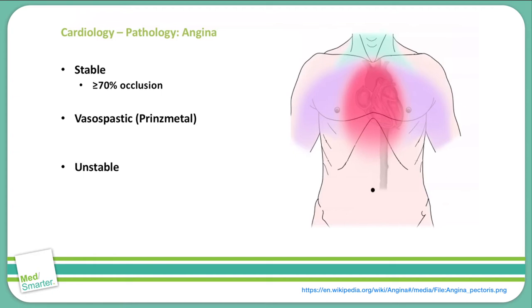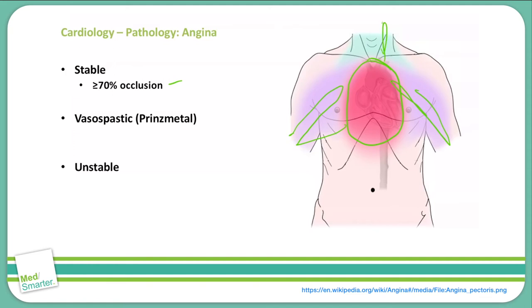Stable angina is usually due to atherosclerosis. We often see greater than or equal to a 70% occlusion of the coronary arteries with stable angina. Symptoms include exertional chest pain in a classic distribution — pain in the middle of the chest that can radiate out into the arms and up into the neck. On EKG we will often see an ST segment depression.